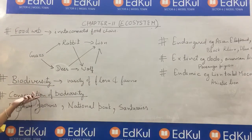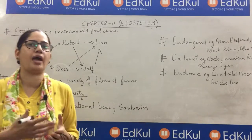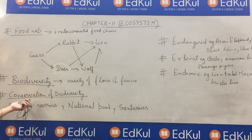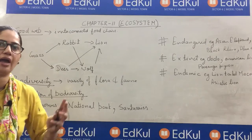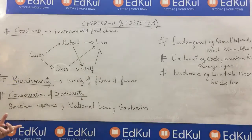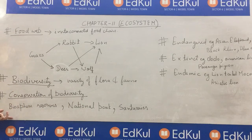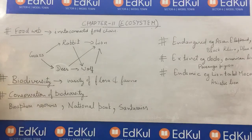Conservation of biodiversity means preservation of all these animals and plants in their natural habitat — that is known as conservation of biodiversity. We should conserve the ecosystem as it is. Now, government has set up various biosphere reserves, national parks, and sanctuaries for preservation of this biodiversity.